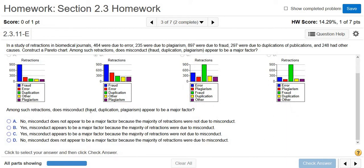Among such retractions, does misconduct appear to be a major factor? So fraud, duplication, plagiarism, absolutely, right? Those are the top three. Well, error is number two. So top two, I'd say, would be misconduct.